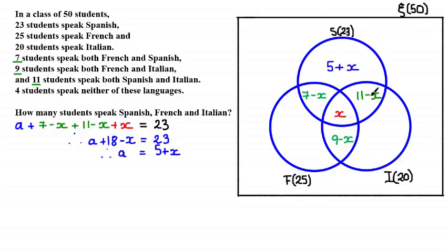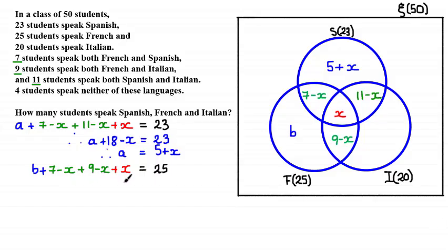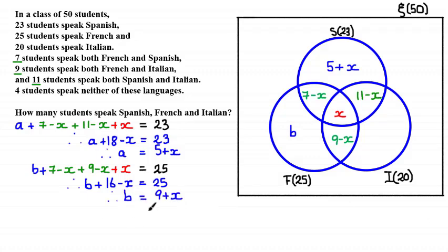We apply the same method for students who only speak French, represented by this shaded region. Let B be that number. Then B plus 7 minus X plus 9 minus X plus X equals 25 — all elements in the French set. Simplifying gives B plus 16 minus X equals 25, so B equals 9 plus X. We update the Venn diagram.